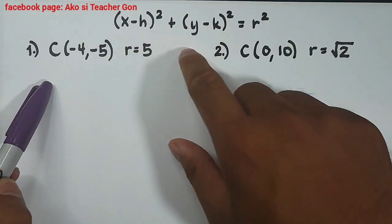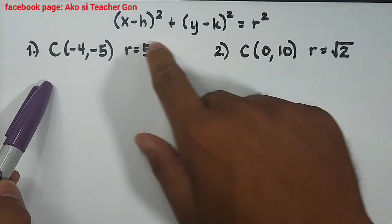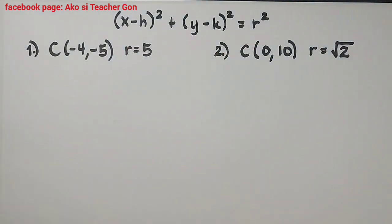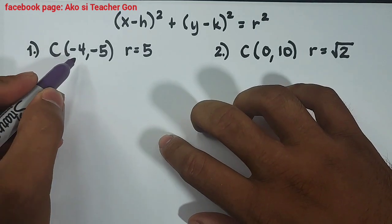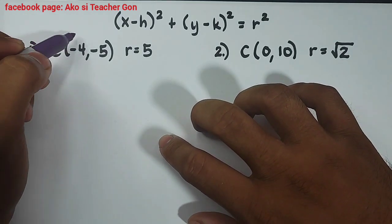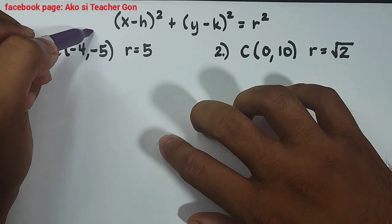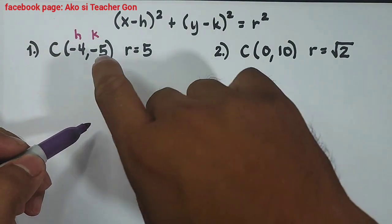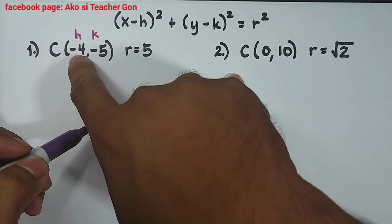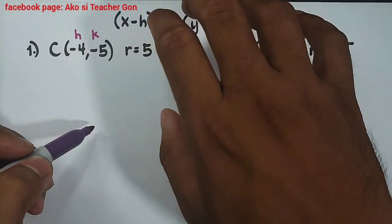Given this problem, always remember this standard form of the equation of the circle. Now in this center we have (-4, -5). This is your variable h and this is your variable k. What we need to do here is we will simply plug in this -4 and -5 to this given standard form.